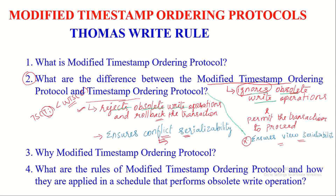Coming to the second point — the difference between modified and normal timestamp ordering protocol. The major difference between these two protocols is only on the obsolete write operation. For example, timestamp ordering protocol rejects obsolete write operations performed by a transaction and rolls back the transaction. Whereas modified timestamp ordering protocol ignores the obsolete write operation and permits the transaction to proceed. This is the major difference between the two protocols.